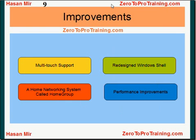Improvements include multi-touch support, a redesigned Windows shell with a new taskbar referred to as the Superbar, a home networking system called Home Group, and performance improvements.